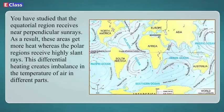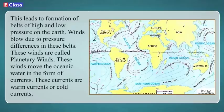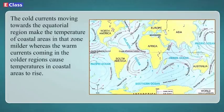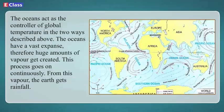The equatorial region receives near-perpendicular sun rays and gets more heat, whereas the polar regions receive highly slant rays. This differential heating creates imbalance in the temperature of air in different parts, leading to formation of belts of high and low pressure on the earth. Winds blow due to pressure differences — these are called planetary winds. These winds move the oceanic water in the form of currents — warm currents or cold currents. Warm currents move towards cold regions and cold currents move towards warm regions, redistributing heat on the earth. Cold currents make coastal temperatures milder, while warm currents cause coastal temperatures to rise. The oceans thus act as the controller of global temperature.